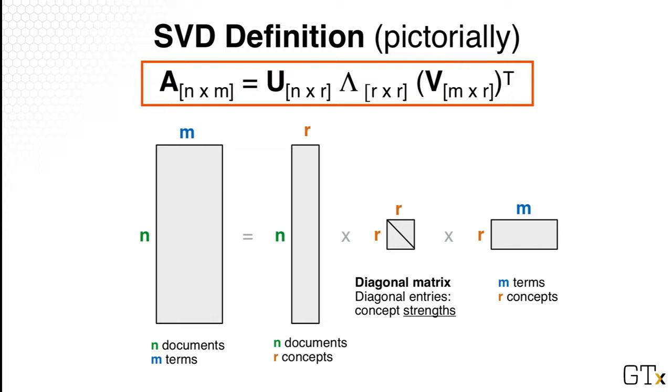And what SVD can do is it can decompose this matrix into three smaller matrices: U, Lambda, and V. So the first matrix U is N by R. N is still the same number of documents. R is what LSI would be able to give you, so it's R number of concepts. And similarly for the V matrix is R by M. So R is the number of concepts and M is the same as our original data matrix, so the number of terms.